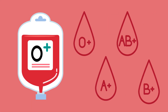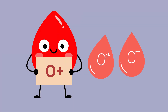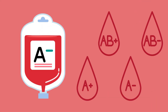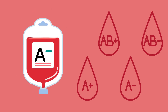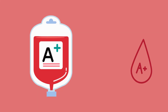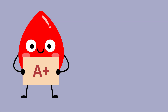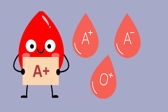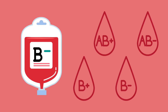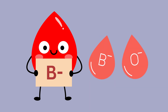Type O positive can donate to all positive blood types, but can only receive from O positive and O negative. Type A negative can donate to A negative, A positive, AB negative, and AB positive, but can only receive from A negative and O negative. Type A positive can donate to A positive and AB positive, but can receive from A positive, A negative, O positive, and O negative.